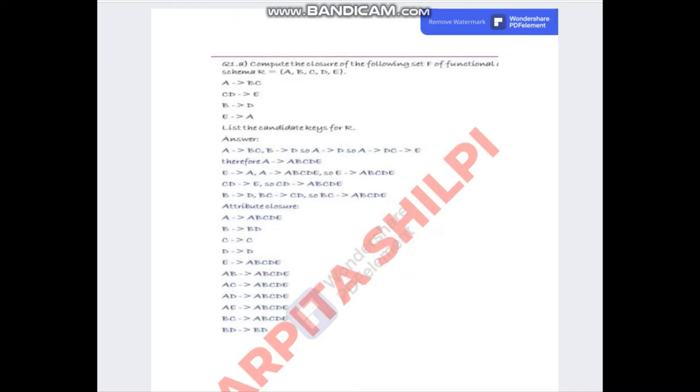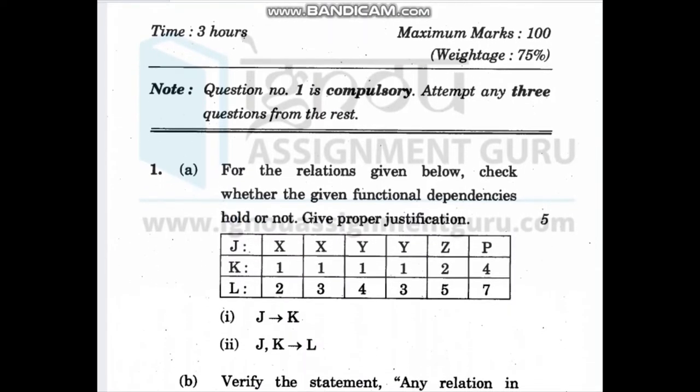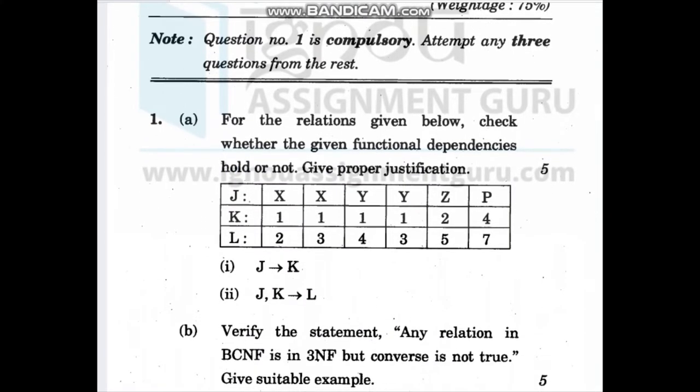This question is asked many times. Compute the closure of the following set of functional dependencies. I will show you some questions. As you can see, in 2018 this question was asked. For the relations given below, check whether the functional dependency holds or not. How does functional dependency hold or not? How do you check? Let's see.